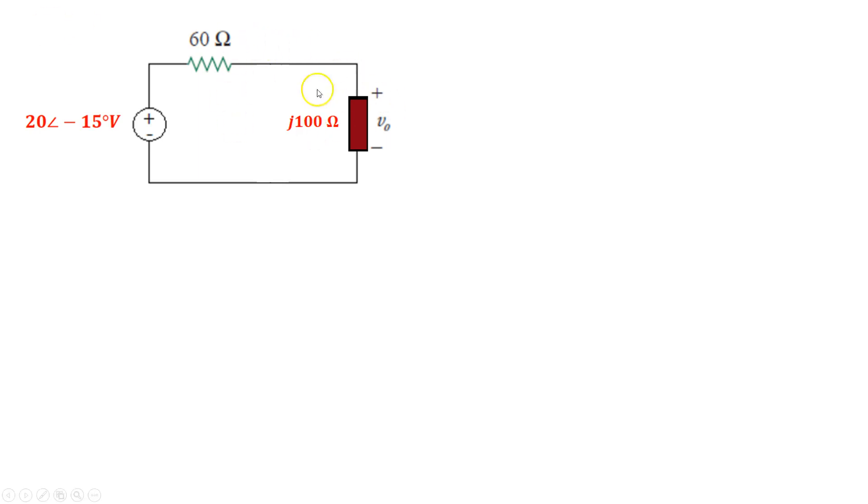So the impedance at this node, so this impedance divided by the total series impedance between these two guys, times that voltage gives us the voltage divided across this new impedance right here. So we can write that as j100 divided by 60 plus j100 times the 20 angle minus 15.